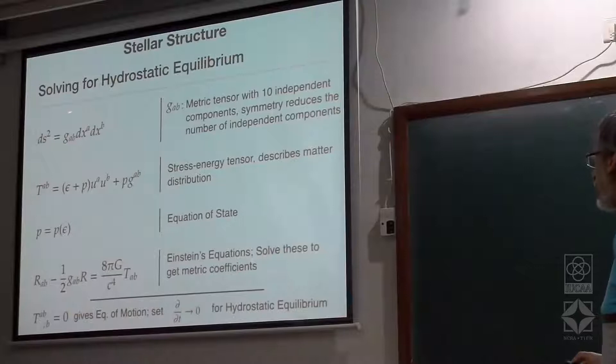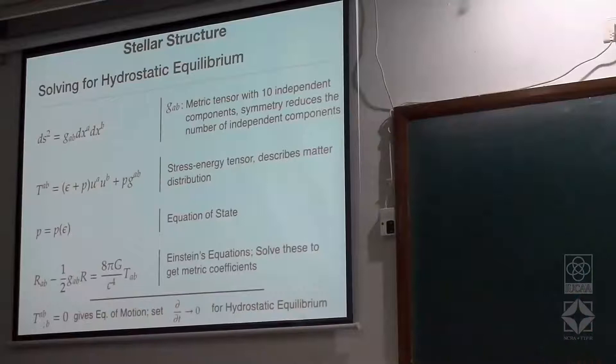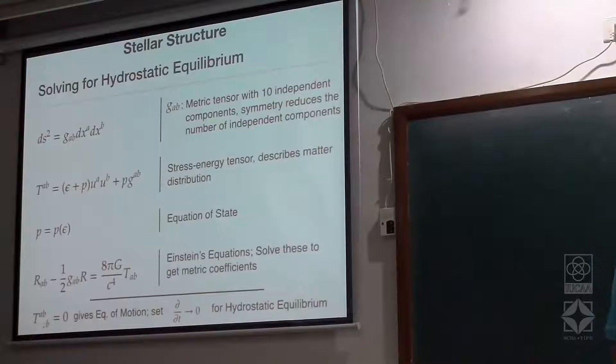To close the system of equations, you need an equation of state to connect energy density and pressure, which appear in the stress-energy tensor. Then finally you have Einstein's equation: R_ab minus half g_ab R equals 8 pi G over c^4 times the stress-energy tensor. This is the equation you solve to get the values of g_ab.